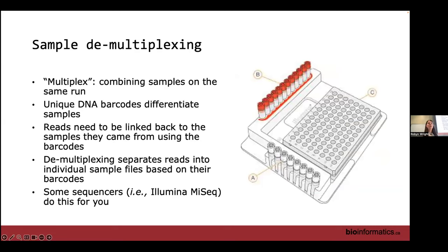Sample demultiplexing: with Illumina sequencing, barcodes are attached to each sequence to indicate which sample they came from. You assign a unique sequence to each row and each column of your 96-well plate, so each combination is unique. Luckily, most sequencing platforms do this step for you — the data you receive at the end of an Illumina run gives you a separate file for each sample.